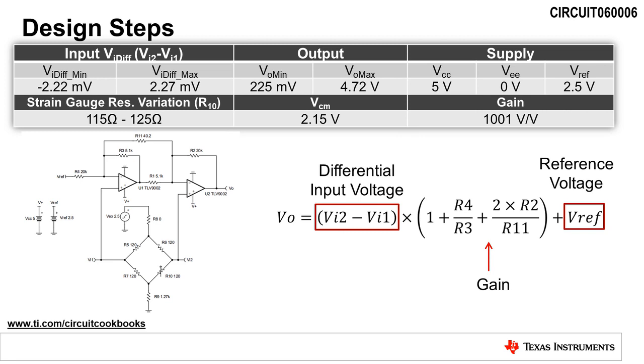Since the differential input voltage can be negative, the reference voltage is set to 2.5 volts to bias the output voltage to mid-supply. To produce the desired output voltage swing, the common mode voltage, or VCM, is set to 2.15 volts, and the gain is 1001 volts per volt.